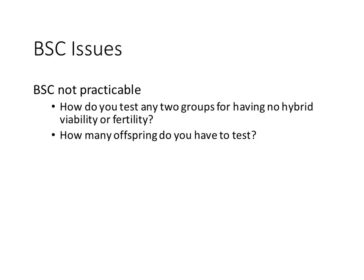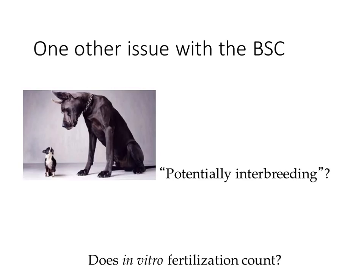One of the biggest issues: what does it mean to be 'potentially interbreeding'? These two dogs are potentially but probably not physically going to be able to reproduce, but you could attempt in vitro fertilization and show that these are, in fact, members of the same species—two different morphs or varieties of Canis familiaris, the house dog. So should in vitro fertilization count when you're talking about species concepts? In nature they wouldn't be able to because of the size difference.